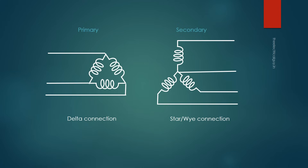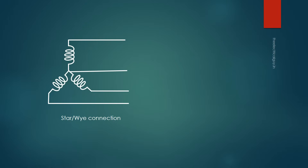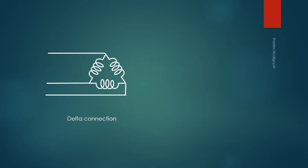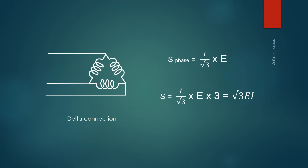A common question is whether the power transferred by star connection and delta connection is the same or different. The apparent power transferred by a single phase of a star connection, multiplied by 3 for three phases, gives a total. Doing the same for delta connection yields the same result. This proves that the power transmitted by both connections is the same.